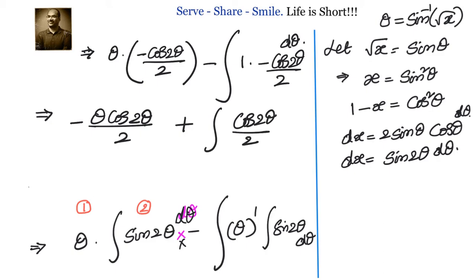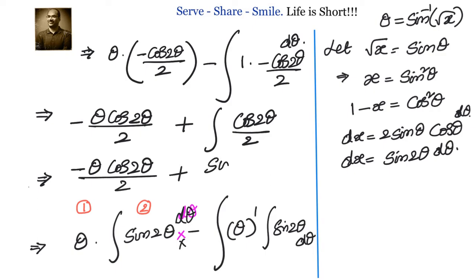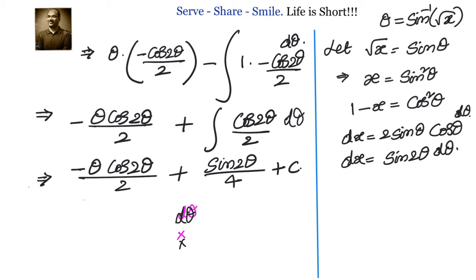The integral of cos2θ/2 dθ is sin2θ/4. So the result is −θ cos2θ/2 + sin2θ/4 + C. Now let us convert back from θ to x.